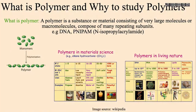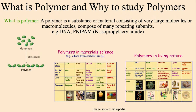What I am studying is the conformation of the polymer under various conditions like temperature, various interactions, various pH values, and so on. In this study, we have mostly studied conformation in different directions. Polymer physics can be done in three ways: experimental, simulation, or analytical. What we are doing is simulation.